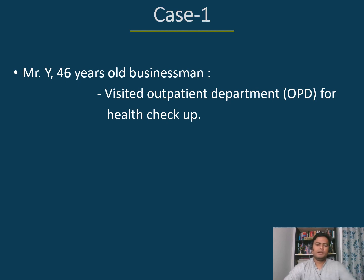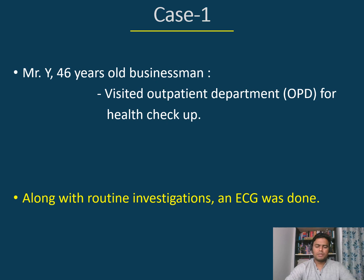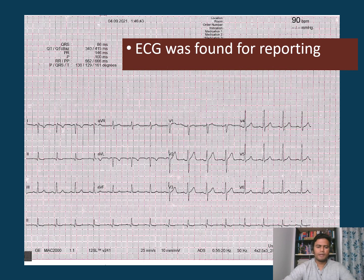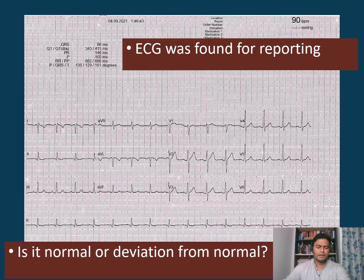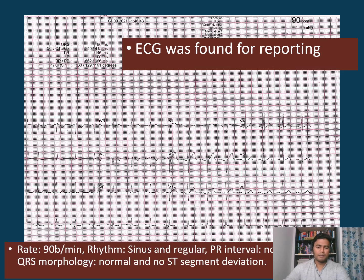Case number one: Mr. Y, a 46-year-old businessman, visited our outpatient department for a health checkup. Along with routine investigations, an ECG was done. This ECG was found for reporting — is it normal or is it a deviation from normal? Let's see.